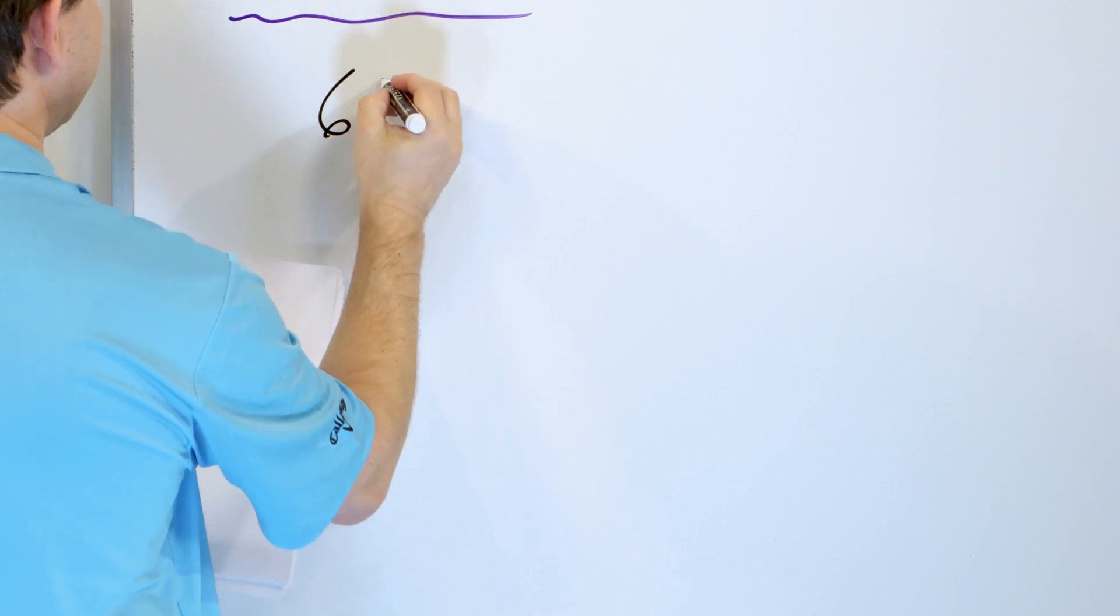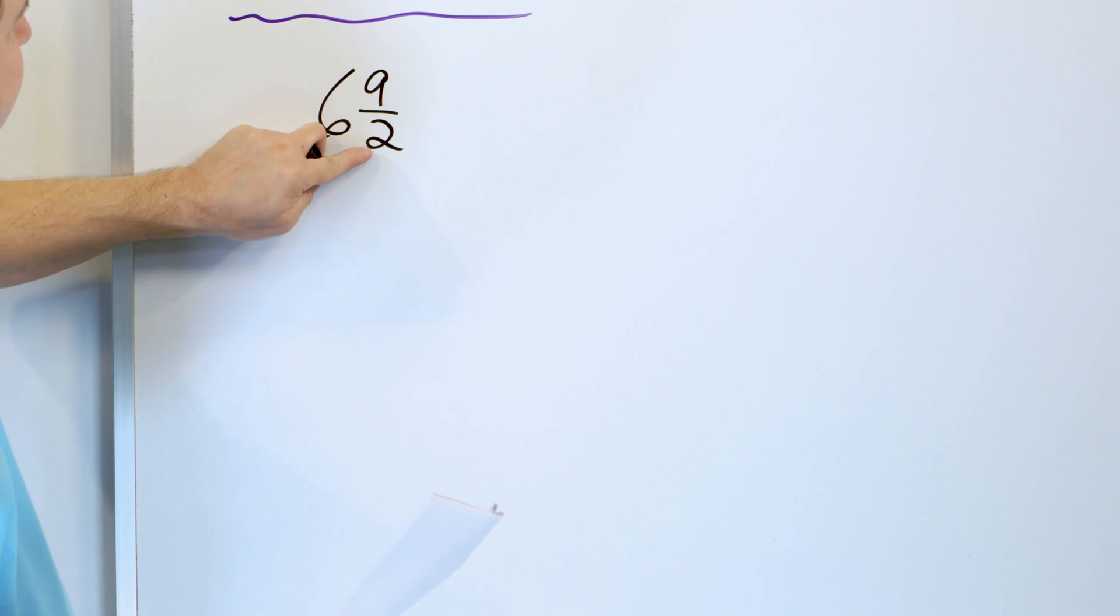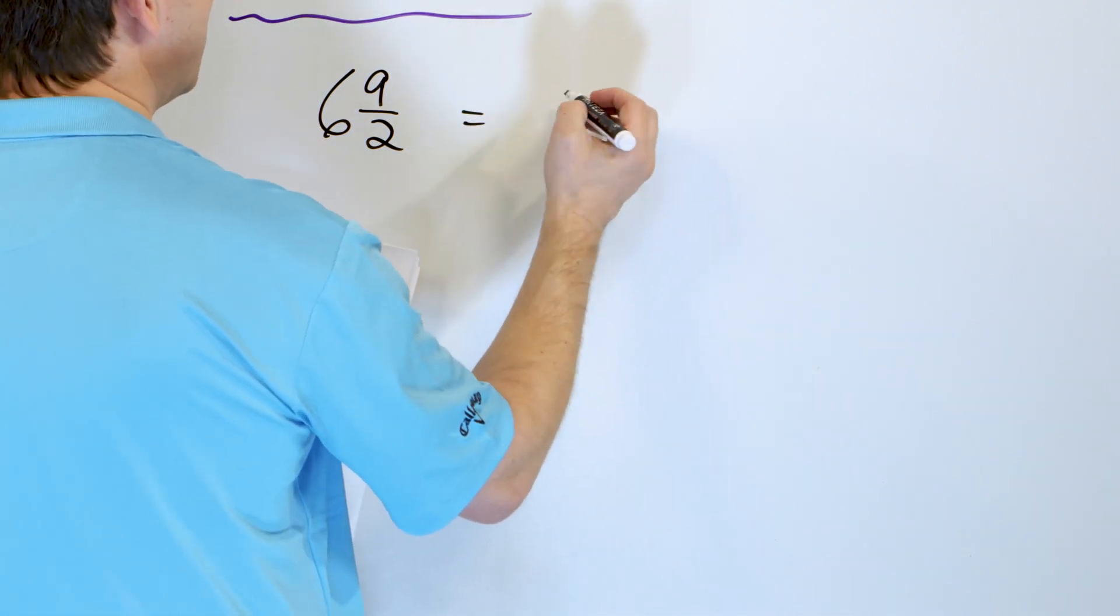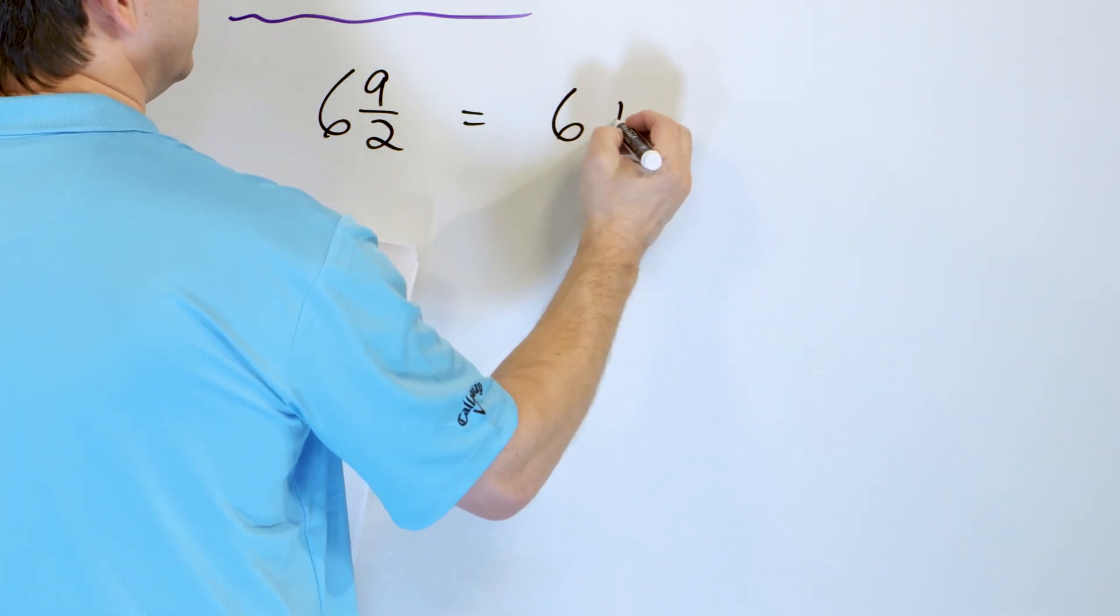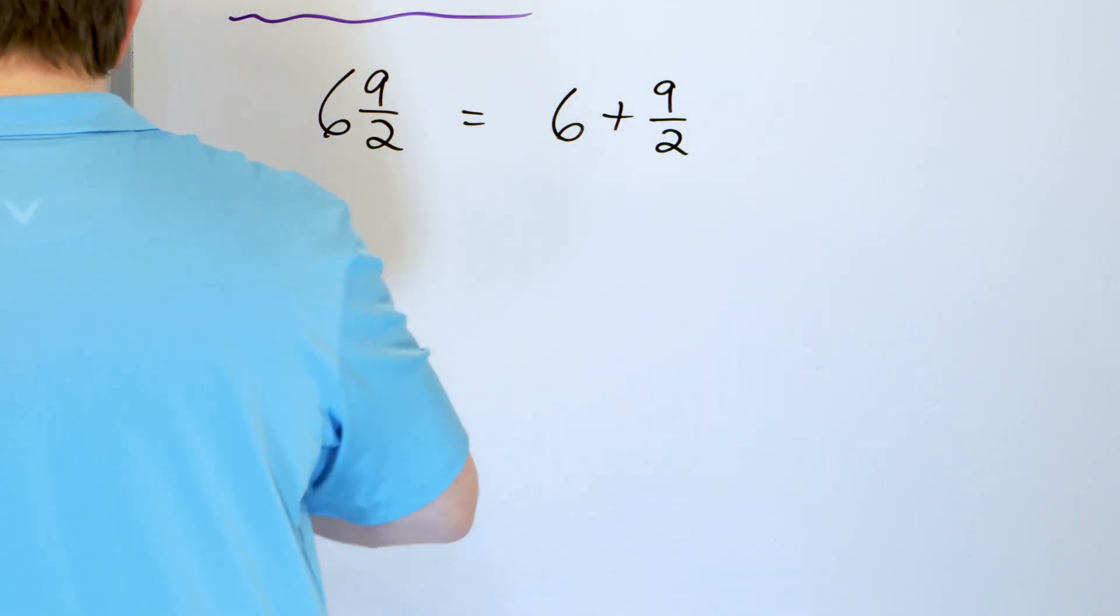Let's take a look at the next problem. Let's say we have 6 and 9 halves. Now if you think about it, if the fraction is halves, if I had 2 halves that would be another whole, but I have 9 halves. So this improper fraction is going to give me a lot more wholes. 6 plus 9 halves, right?